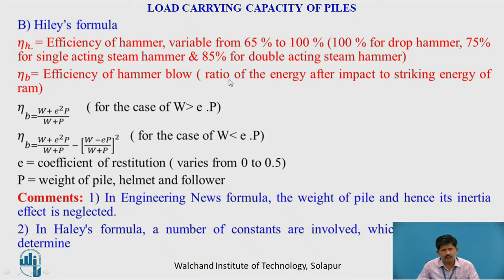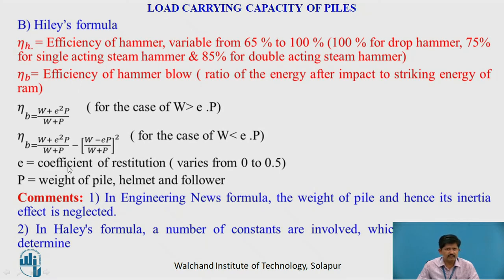η_B is the efficiency of hammer blow — the ratio of energy after impact to the striking energy of the hammer. For W > e·P: η_B = (W + e²·P) / (W + P). For W < e·P: η_B = (W + e²·P) / (W + P) − ((W − e·P) / (W + P))², where e is the coefficient of restitution ranging from 0 to 0.5, and P is the weight of the pile, helmet, and follower. In the Engineering News formula, the weight of the pile and its inertia is neglected, whereas in Hiley's formula, constants are involved that are difficult to determine.